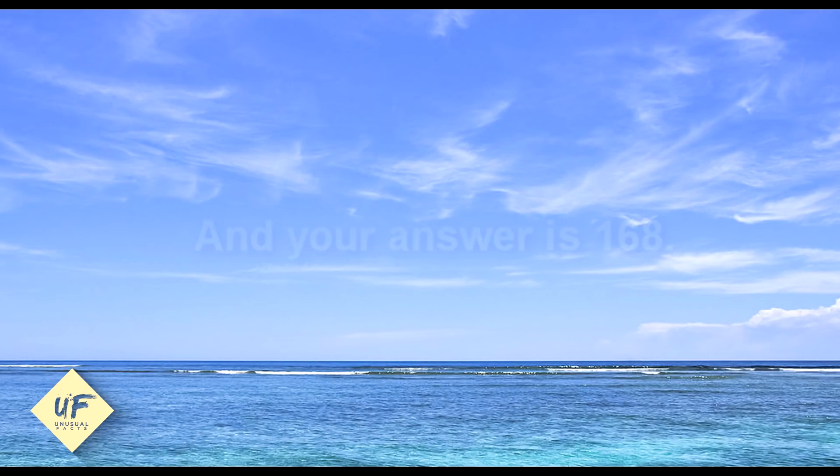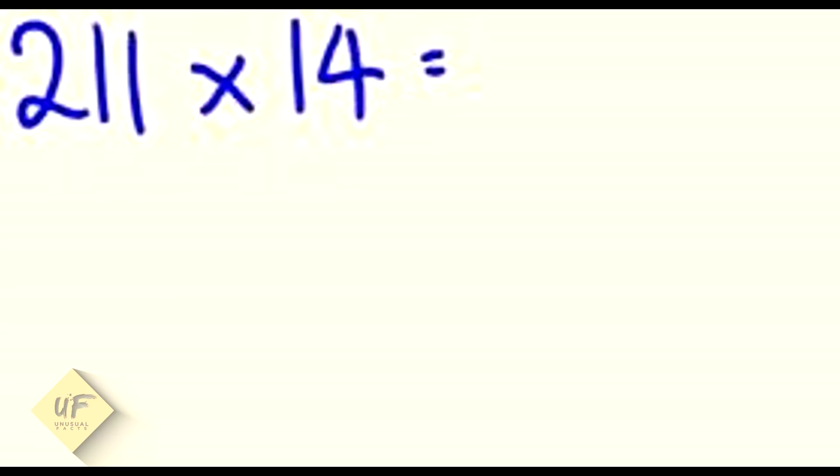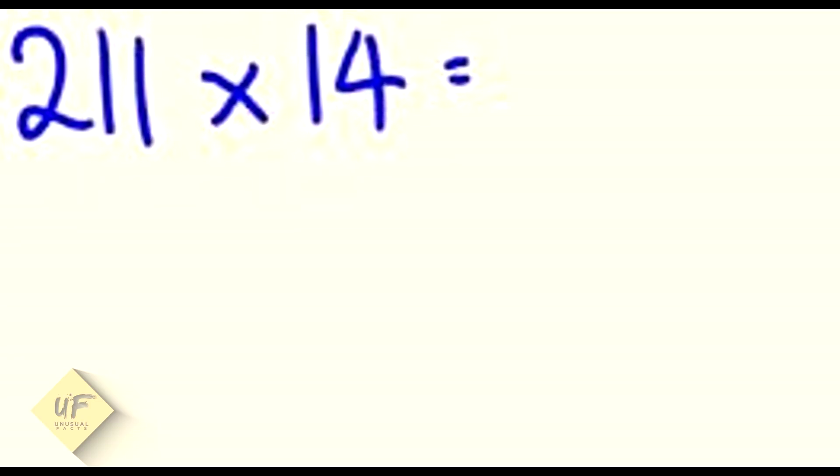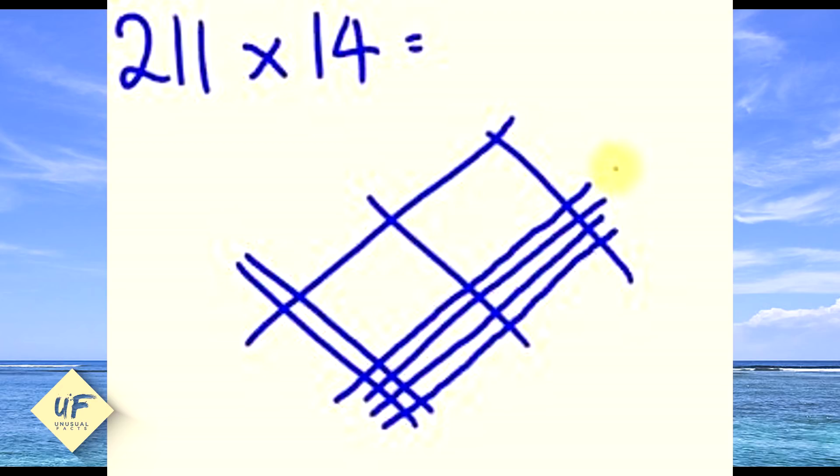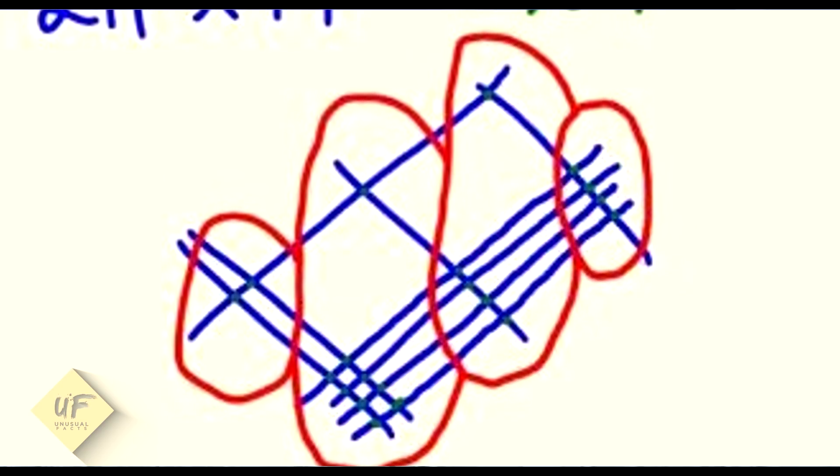To do the same for a triple-digit number, follow the same method. But notice that now you will have four sections instead of three. So for example, 211 times 14 equals 2,954.